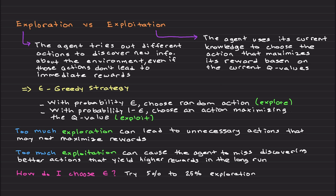How you choose your epsilon is, if you do too much exploration, let's say 90% of the time you choose your actions randomly, that's bad. This can lead to unnecessary actions that may not at all maximize your rewards. Your algorithm will work randomly. And on the other hand, too much exploitation, let's say you only explore only 0.01% of the time, so you always choose your actions optimally from the Q function using this argmax. This can cause the agent to miss discovering better actions that can yield higher rewards in the long run.